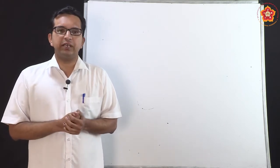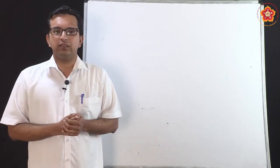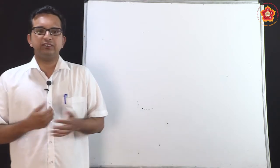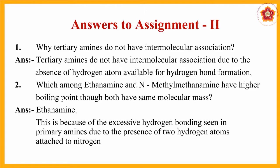Before that, let us see the assignment answers given in the last segment. A couple of questions were given, so let us see the answers. The first question is: why do tertiary amines not have intermolecular association? This was explained extensively — in a tertiary amine there is no hydrogen atom attached to nitrogen, and therefore it cannot undergo hydrogen bonding. The second question: which among ethanamine and N-methyl methanamine has a higher boiling point?